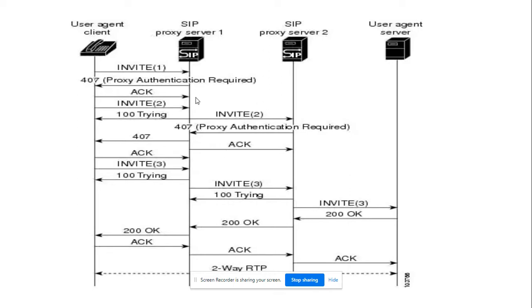When your proxy server wants to make an outbound call through your provider or any other third-party proxy — and this SIP trunk may not be a registered trunk but an IP-based SIP trunk — it will send an INVITE to the SIP proxy provider. The provider responds with a 407 Proxy Authentication challenge, then the SBC sends an ACK, and then resends the INVITE with the Authorization header.